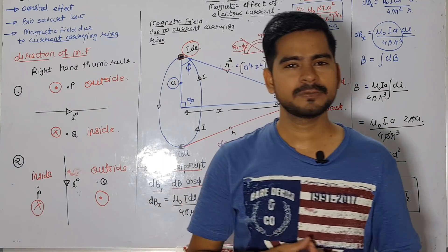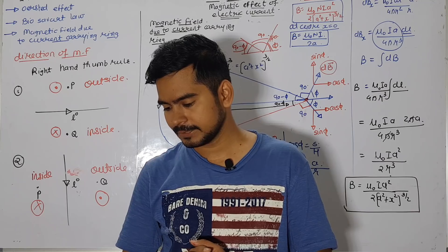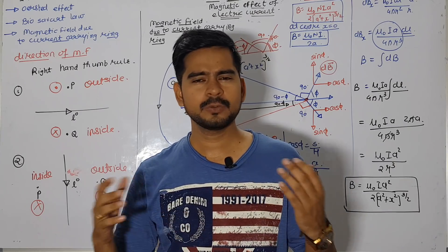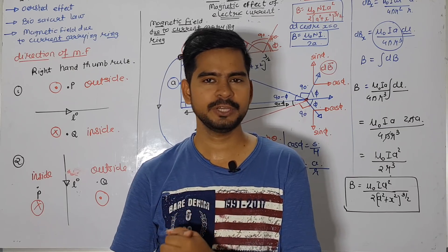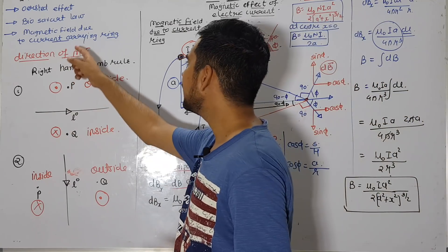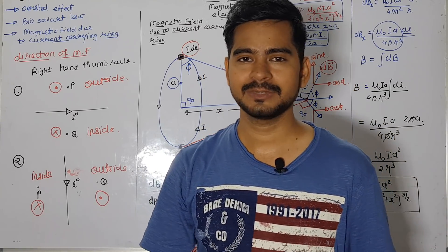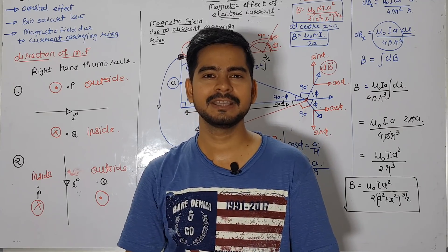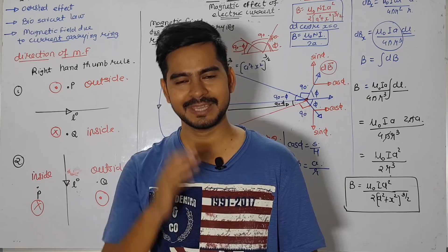This was the derivation of magnetic field due to a current-carrying ring. To recap: in this class we covered Oersted's effect, Bio-Savart Law, the direction of magnetic field, and the derivation of magnetic field due to a current-carrying ring. The next video will cover Ampere's circuital law, and upcoming topics include cyclotron, solenoid, and toroid. If you liked the video, please subscribe to the channel and share with maximum students. Thank you so much for watching!